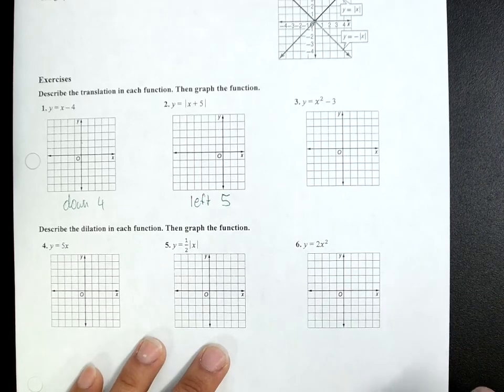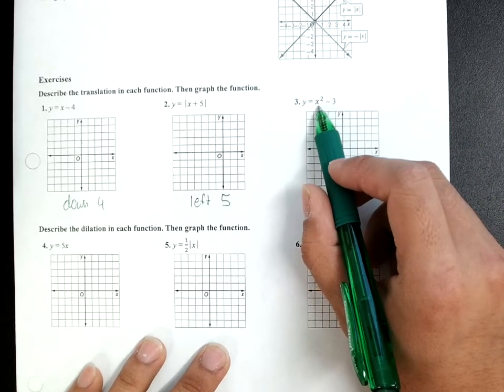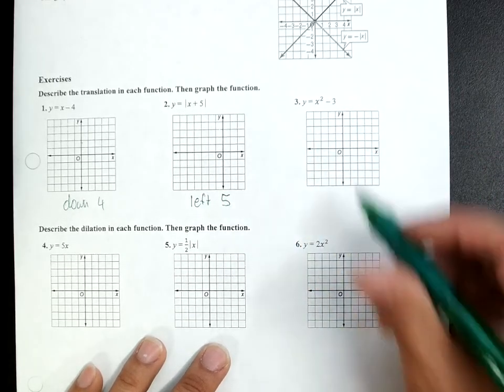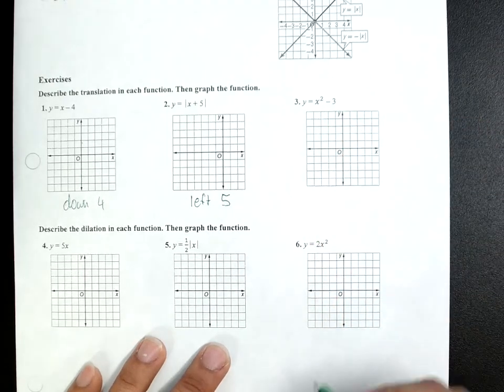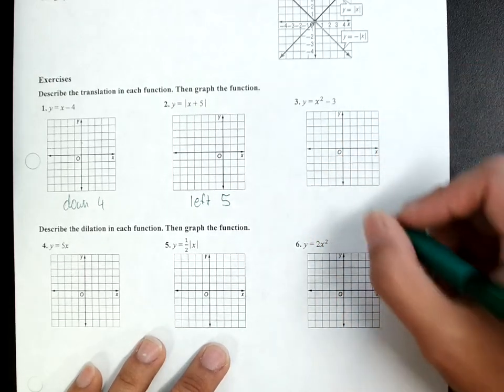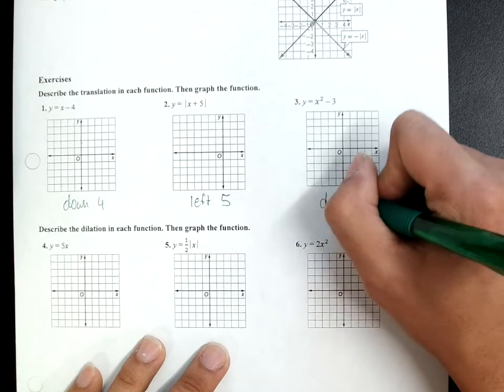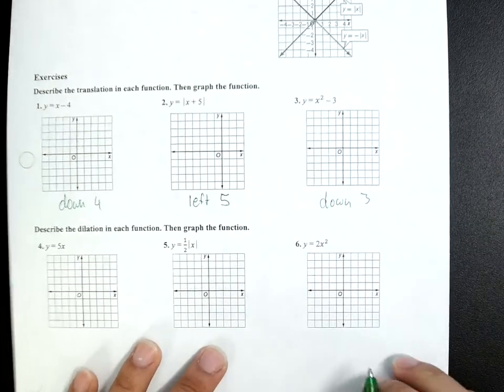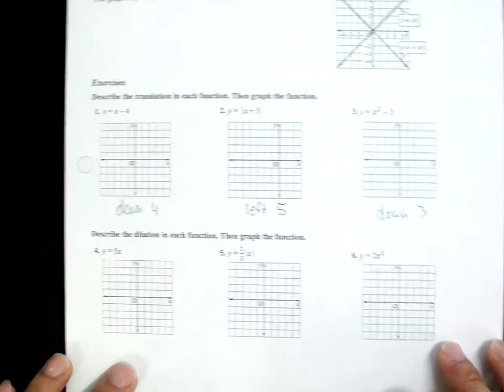Look at 3. This is a parabola. And, you have a minus 3 outside. So, that's going to be down 3 again. Now that we see that, let's graph those.